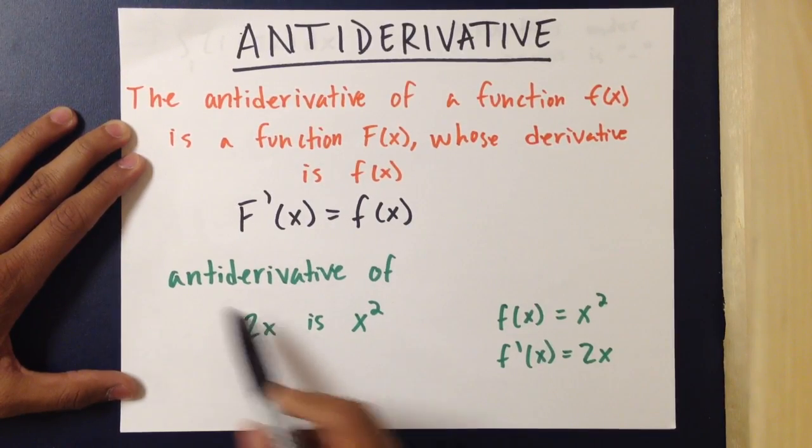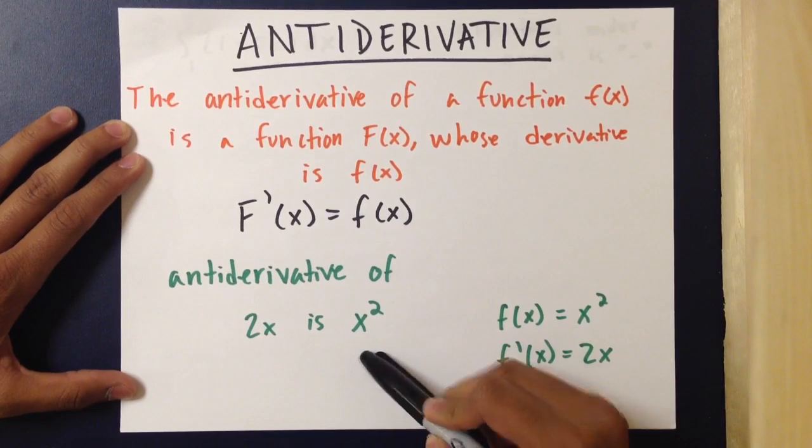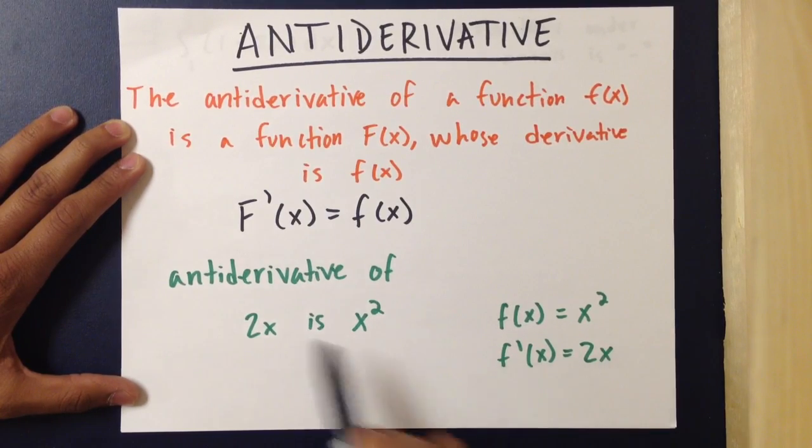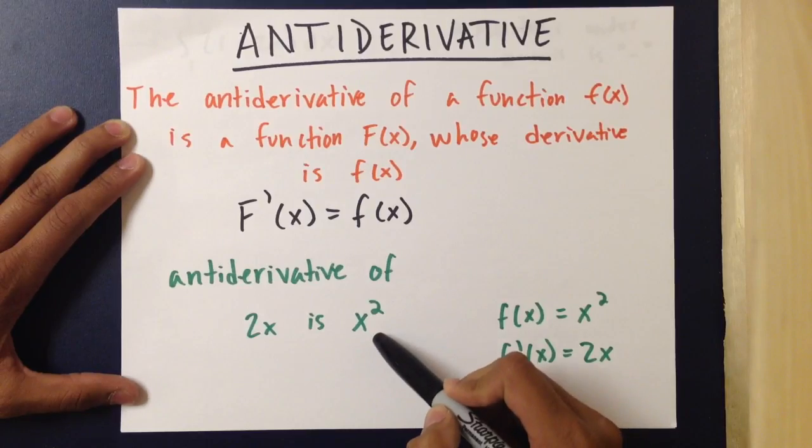For example, the antiderivative of 2x is x². Since we know that f(x) = x² and the derivative of f(x) is 2x, the antiderivative of 2x is x².